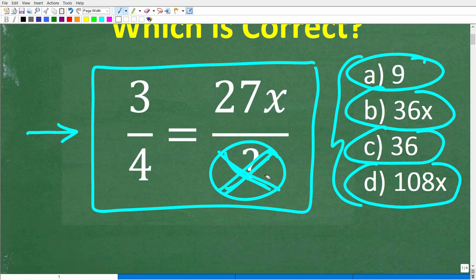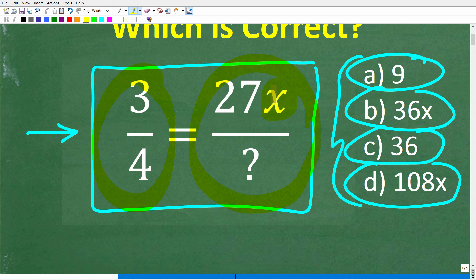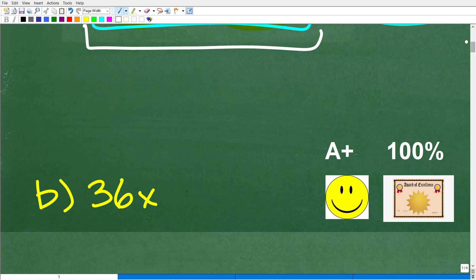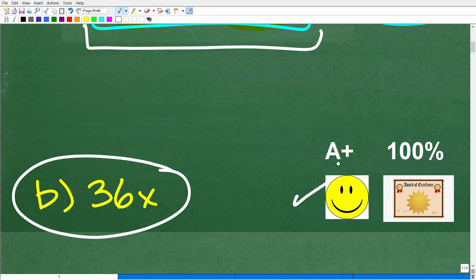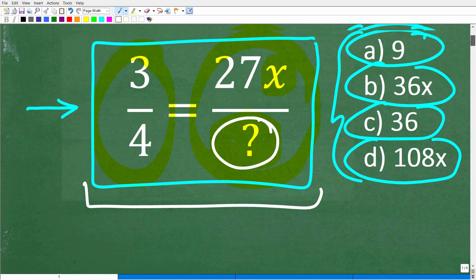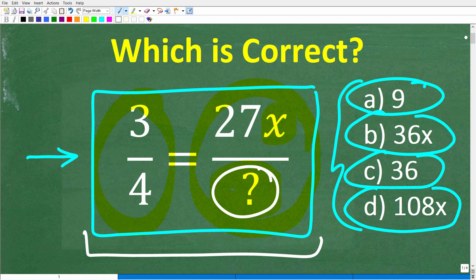All right, so again, here is our problem. We have a fraction, 3/4, and it's equal to another fraction. Of course, we have this variable here, which is going to make this problem interesting. But we need to figure out what the denominator is right here in order for this entire statement to be true. And let's take a look at the right answer. So the correct answer is B, 36x. Now, if you got this right, you definitely get a happy face, an A+, a 100%, and a Certificate of Excellence for being a certified professional expert in the area of basic ratios and proportions.